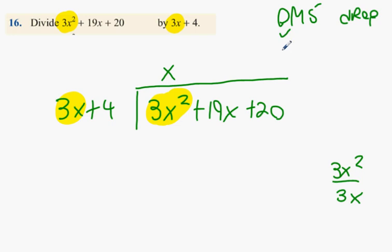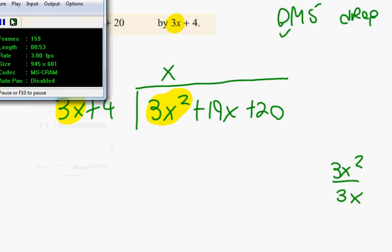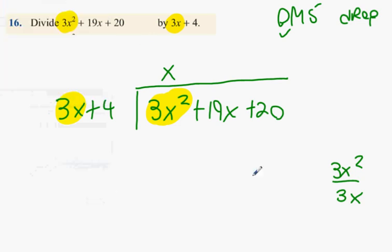Step 2. Okay, next thing. X times 3x, we're at the multiply stage. 3x squared. X times 4? 4x.